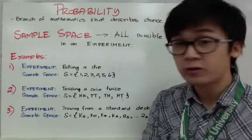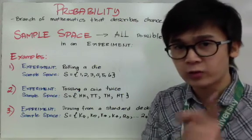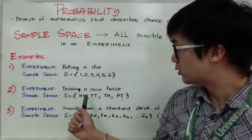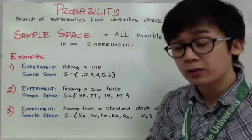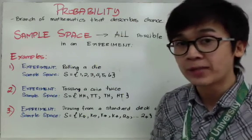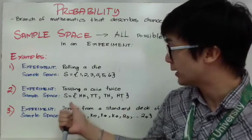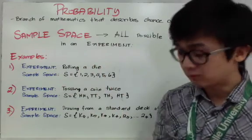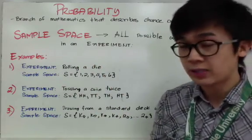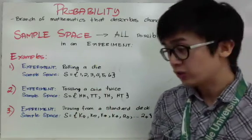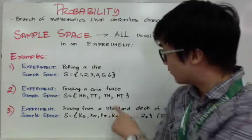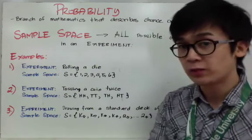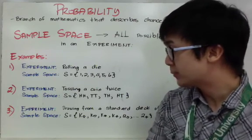When we toss a coin twice, the sample space — the list of all possible outcomes or combinations — will be HH, TT, TH, and HT. For example, if I flip a coin and it's tails, then flip it again and it's heads, I have tails and heads — that's one combination. Listing all of them, there are four possible combinations when you flip a coin twice, and that is your sample space.